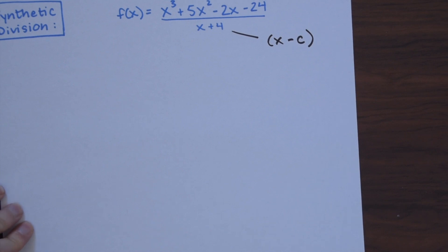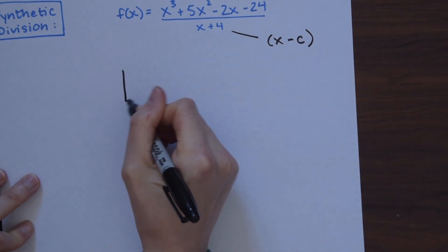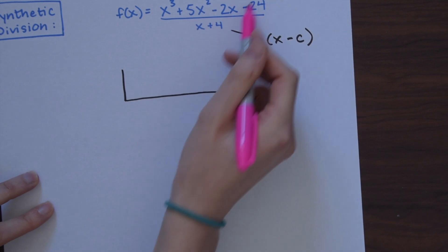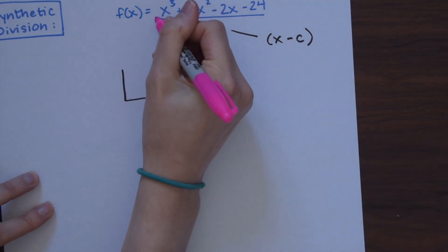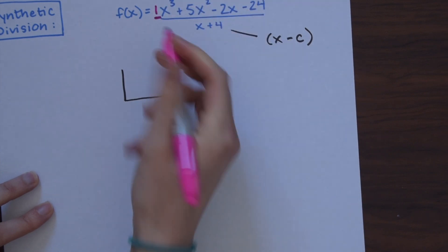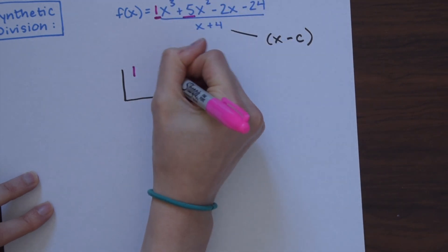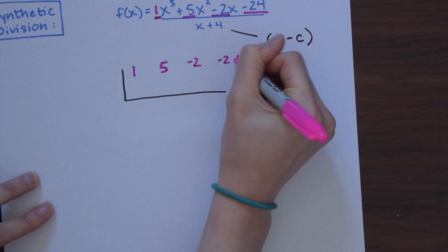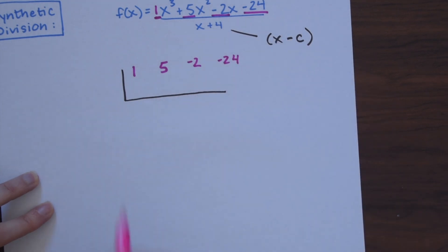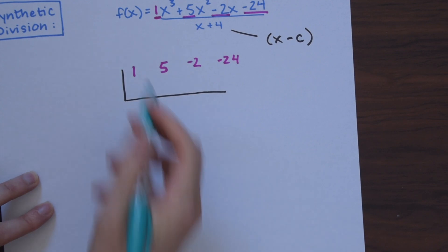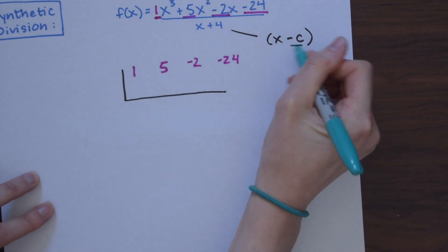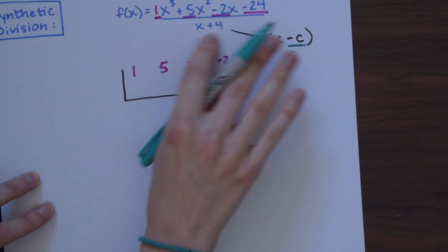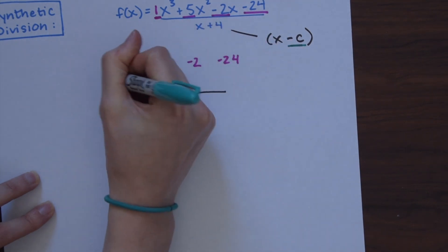The first thing we're going to do for synthetic division is create a little table, then bring down each coefficient of our polynomial into this table. The coefficient is always the number before the variable. So here we have 1, then 5, then negative 2 — we include the minus sign — and then negative 24. We also put a number on the outside of our table, which is c. Since we have x + 4 but the form is x minus c, we always negate that number, so this is going to be negative 4.